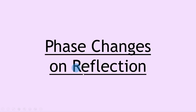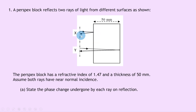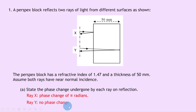We'll now do one worked example for phase changes on reflection. A perspex block reflects two rays of light from different surfaces. Ray X reflects off the first surface and ray Y reflects off the second. The perspex has a refractive index of 1.47 and thickness of 50mm, with near normal incidence assumed. Part A asks for the phase change on reflection: ray X goes from air to perspex (less to more dense), so it undergoes a phase change of π radians. Ray Y reflects at the perspex-to-air surface (more to less dense), so it undergoes no phase change.